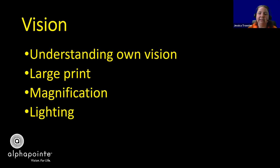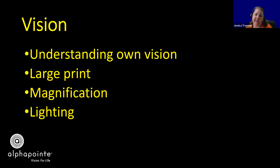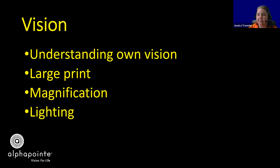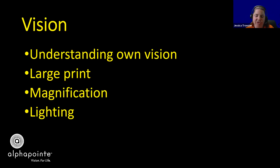Lighting is another big one, and it goes back to understanding your vision. How bright a light do I need? Are my eyes sensitive to light? Does the light need to be over my shoulder? Using lighting to help them see better — if I'm having trouble with something, I can turn on the light or use my task light, and sometimes that's all I need to be able to do that task visually.